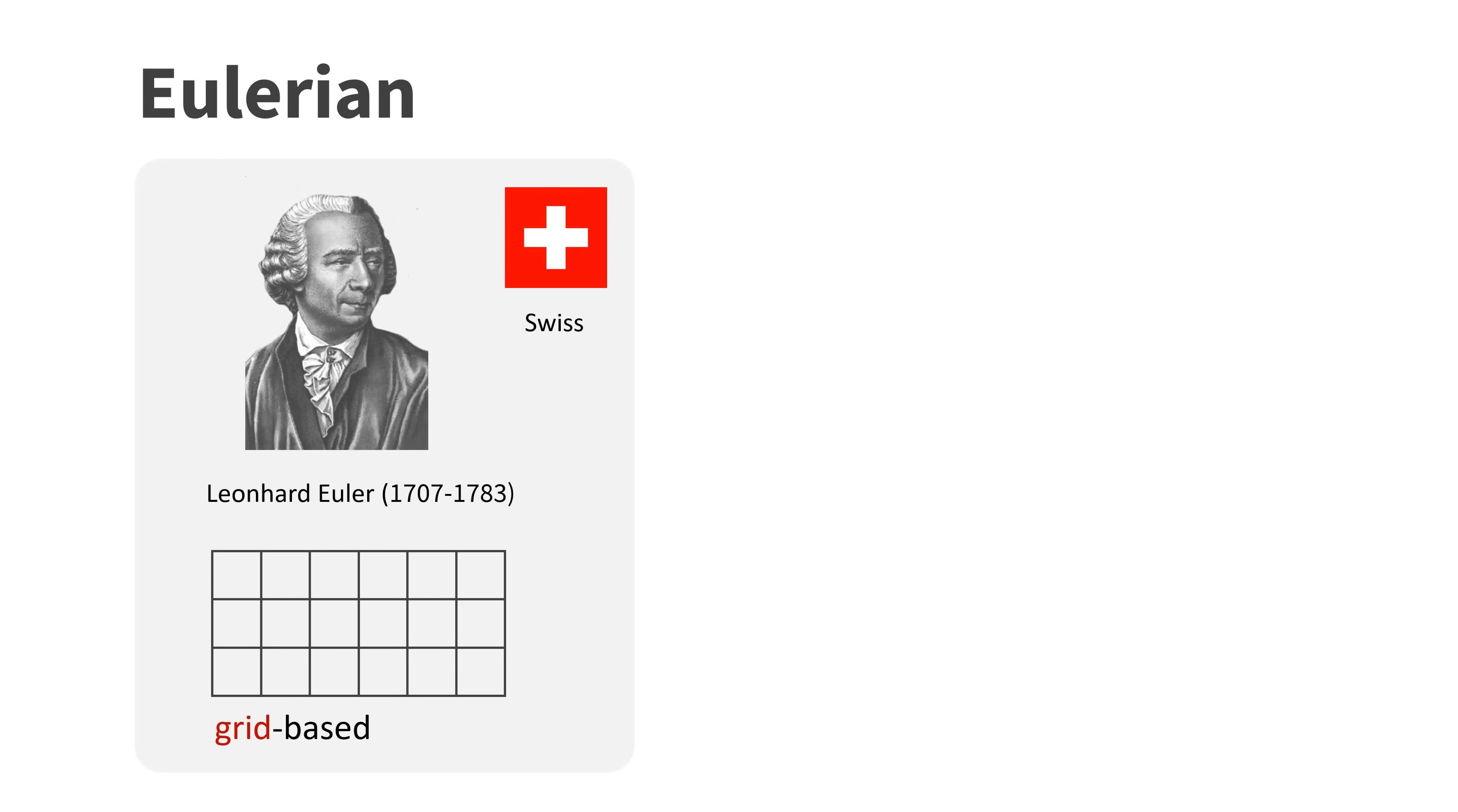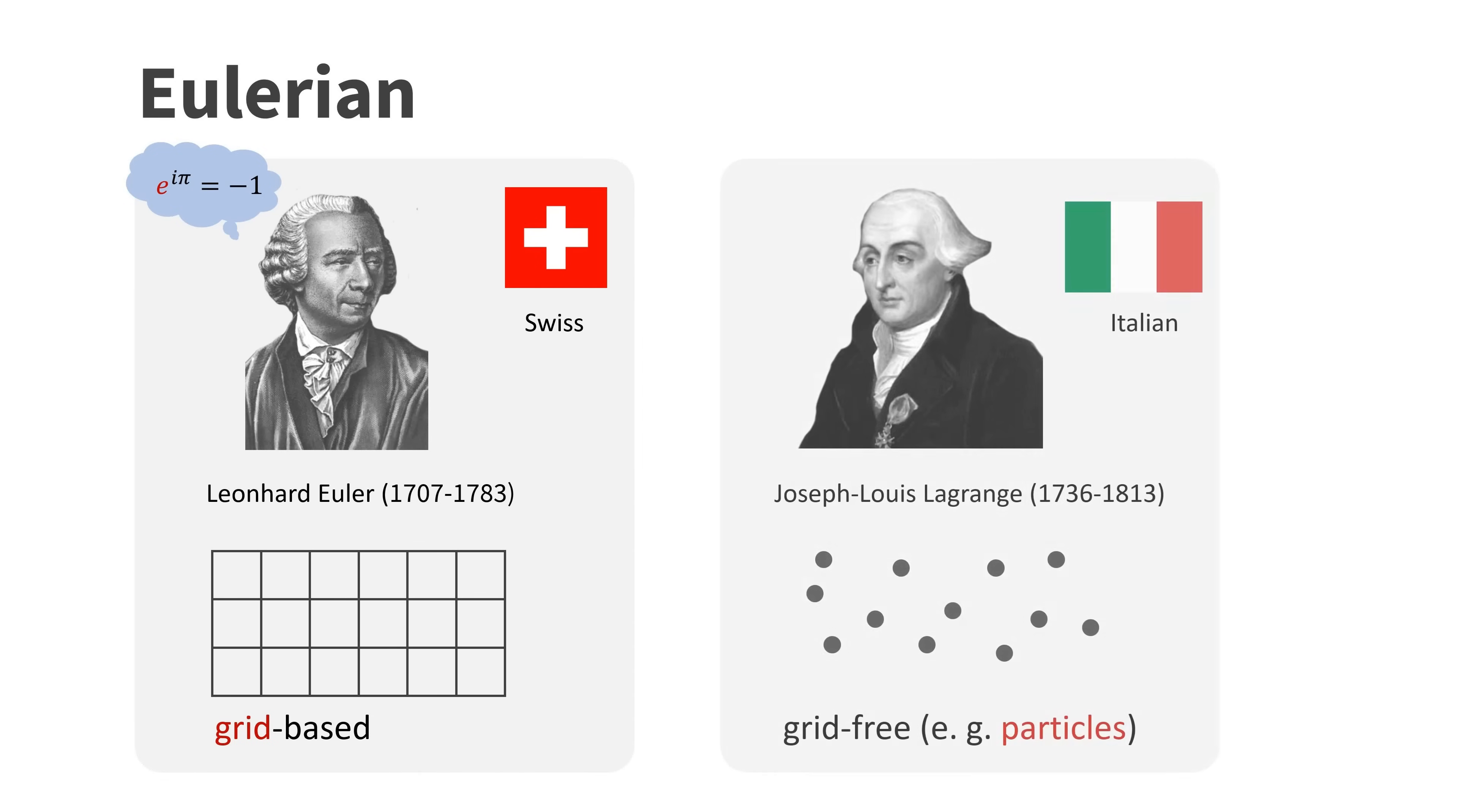He is most famous for the mathematical constant E. Methods that do not use a grid for simulation are associated with the Italian mathematician Joseph-Louis Lagrange.